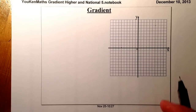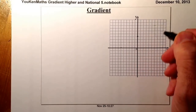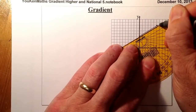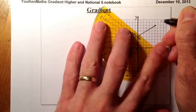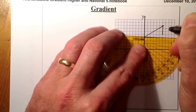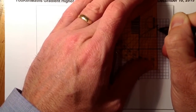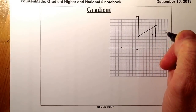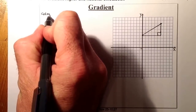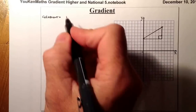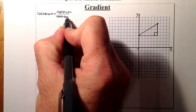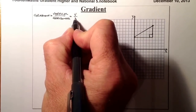Let's draw a right-angled triangle here. Normally what we've used before to work out the gradient is we work out what the vertical side is and we divide that by the horizontal — or you remember it as V over H.